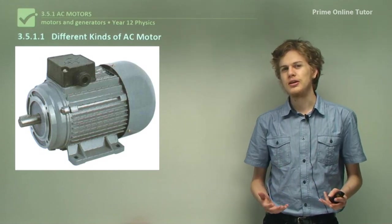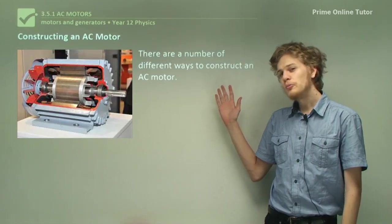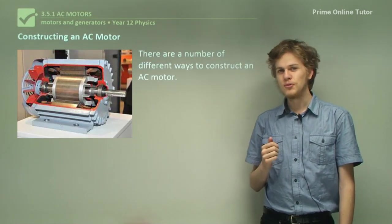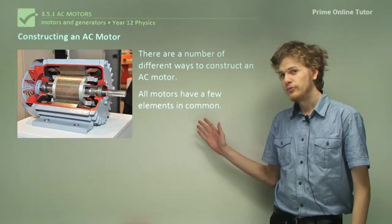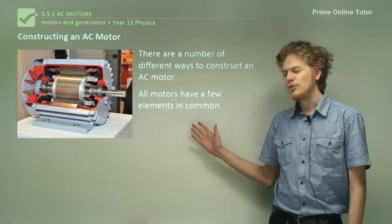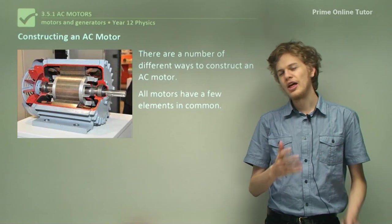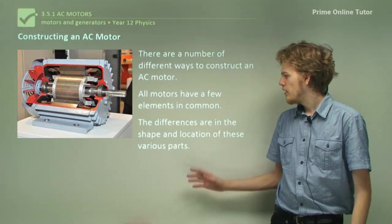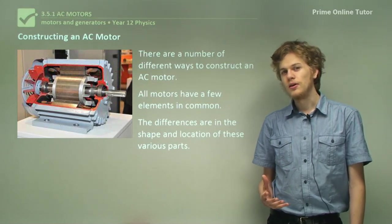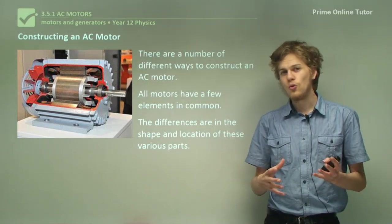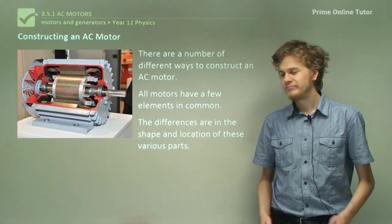First let's look at the parts that we need to make a motor. There are a number of different ways to construct an AC motor, and we're going to be looking at a few of them. But all motors, regardless of how they're constructed, have a few elements in common. These are things that all motors will have whether AC or DC. The differences are in the shape and location of these various parts, whether the stator is the magnet or the coil, or whether the rotor is the coil or the magnet.